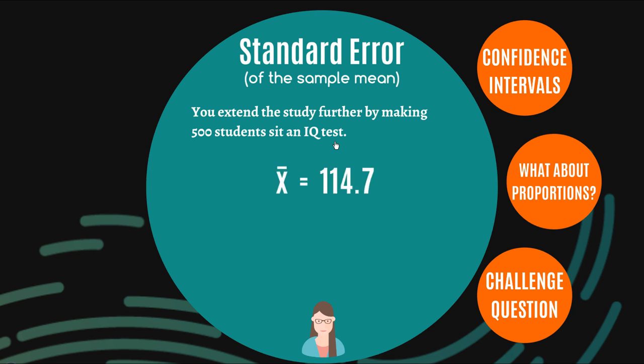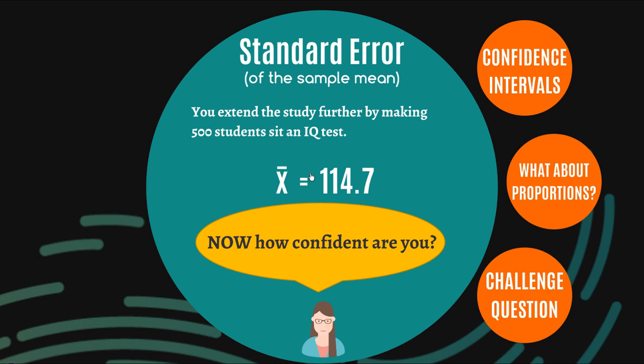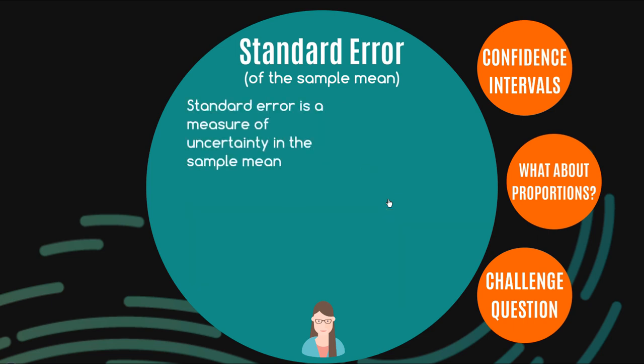So the higher the number of observations you have, the more confident you are in your sample mean. So the standard error is actually a measure of this uncertainty in the sample mean, and it has that formula.